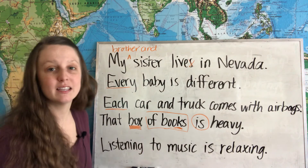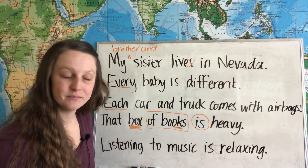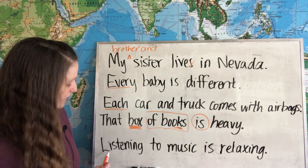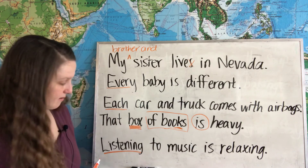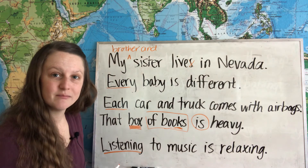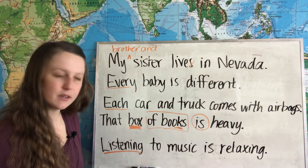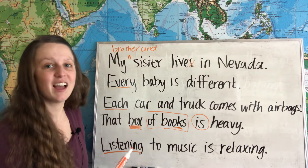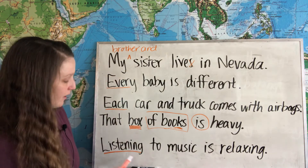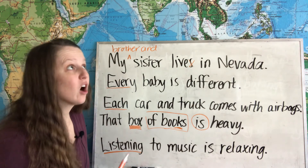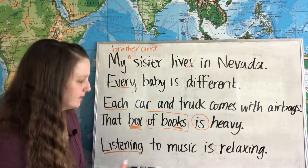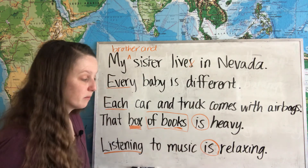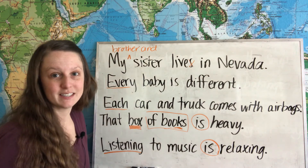Our last example is: listening to music is relaxing. Here our subject is 'listening,' and this is a gerund — that's when we use an -ing verb to act like a noun. Gerunds, like 'listening,' are always singular. So we use the singular verb 'is' for this example.